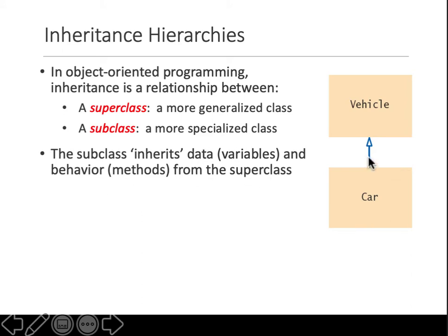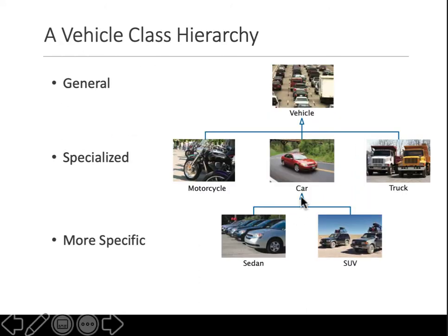The subclass can inherit from the parent or superclass — it can inherit data and the methods defined in the parent class. Graphically, a vehicle has certain properties common to a truck, car, or motorcycle. A car has four doors but a motorcycle does not, so doors come in at the car level. An SUV also has four doors at that level.